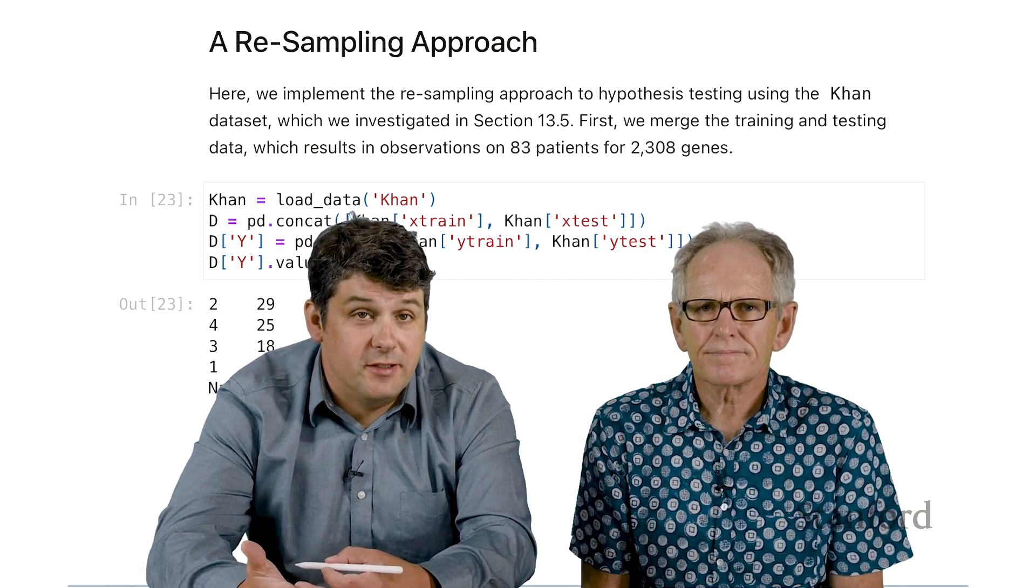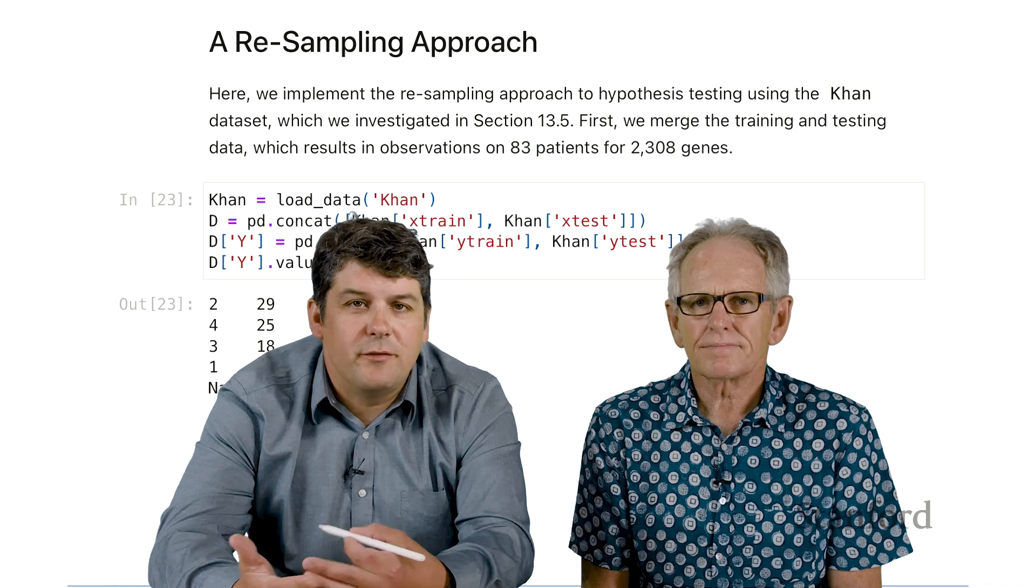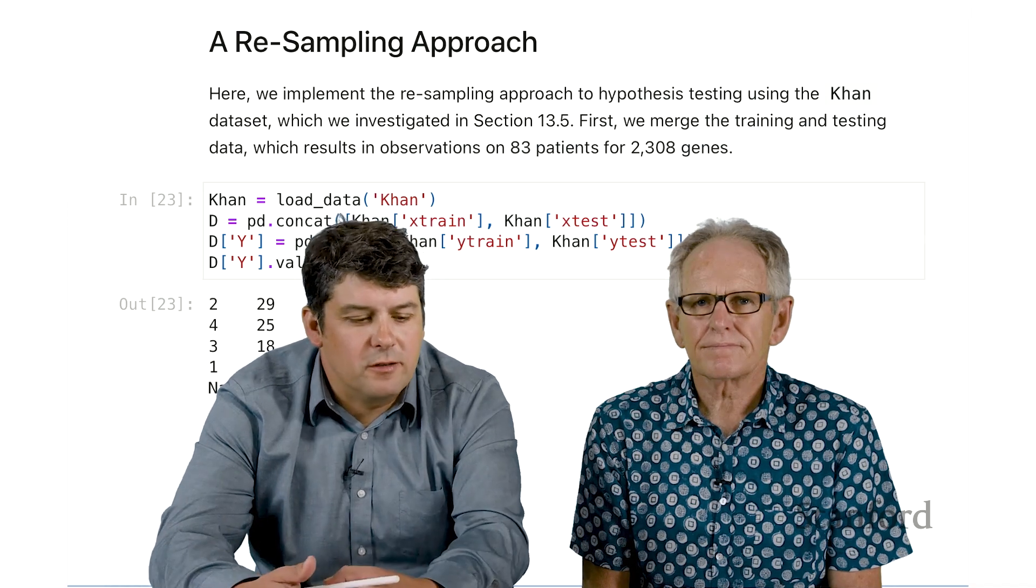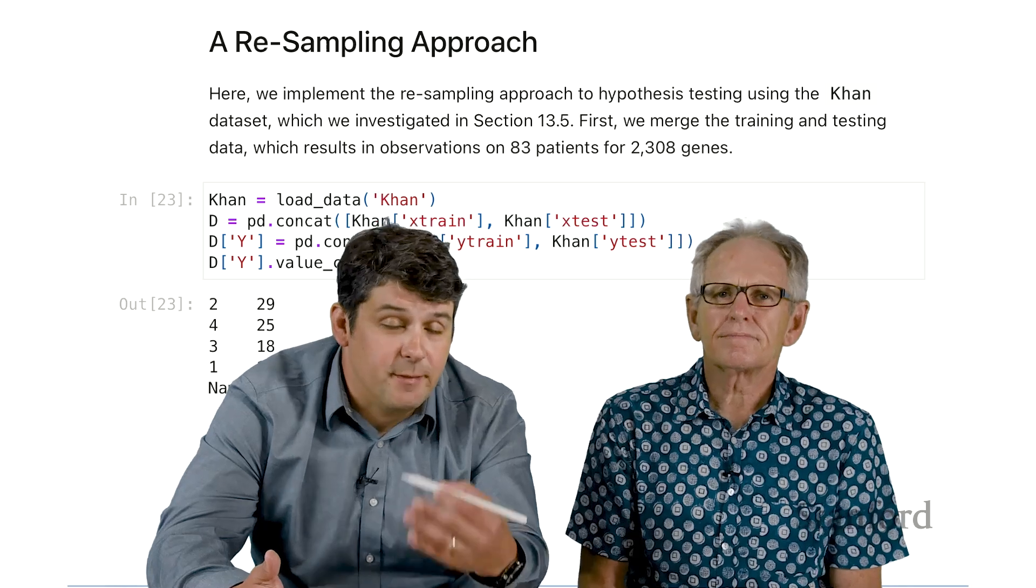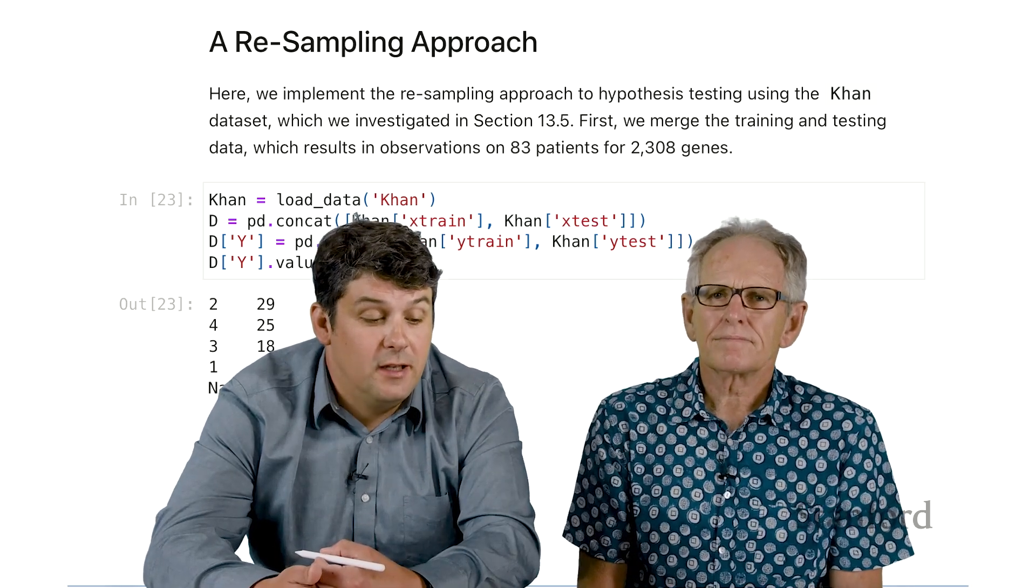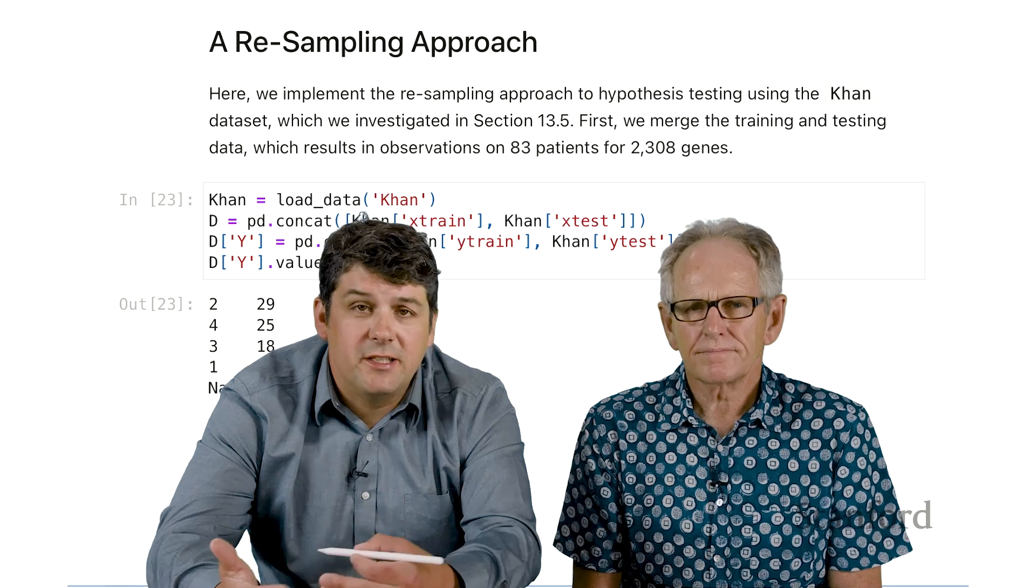And so they make various assumptions. Now those assumptions may or may not be true, so there's often interest in procedures that work better when the assumptions of the t-test may not specifically hold. And so what we're going to look at here is what's sometimes called a permutation test.